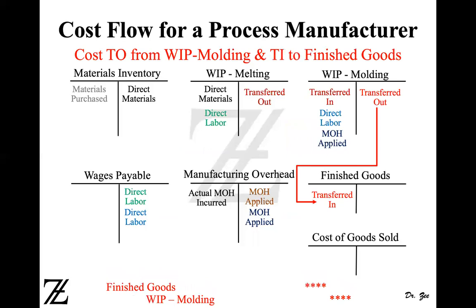Next, costs transferred out from work in process molding and transferred into finished goods inventory. Now the goods are completed. This transferred-out cost is essentially the same as cost of goods manufactured in job order costing — the cost moving from work in process to finished goods inventory. The journal entry is the same: finished goods inventory is debited and work in process molding is credited.